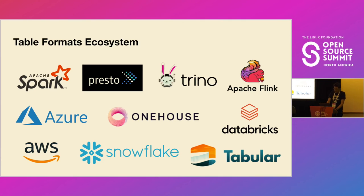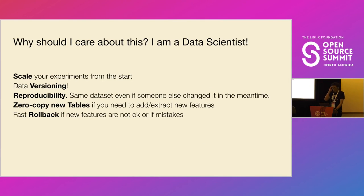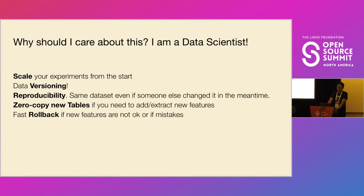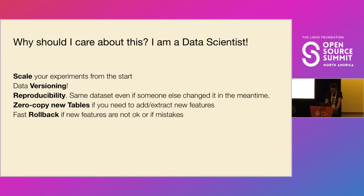Why should a data scientist care about this? First, you can start working on scalable experiments from the beginning — not just taking a CSV and then discovering it doesn't scale. You can also start thinking about data versioning from the beginning: roll back or go forward with versions. Most importantly, you can reproduce your experiments. And zero-copy tables are extremely useful for creating table copies. I think data scientists are the ones winning most from this.